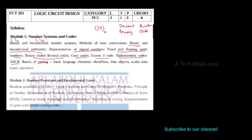In Verilog, we write simple code for simulation. It is called a hardware description language. We use basic language elements including identifiers, data objects, scalar data types, and operators.